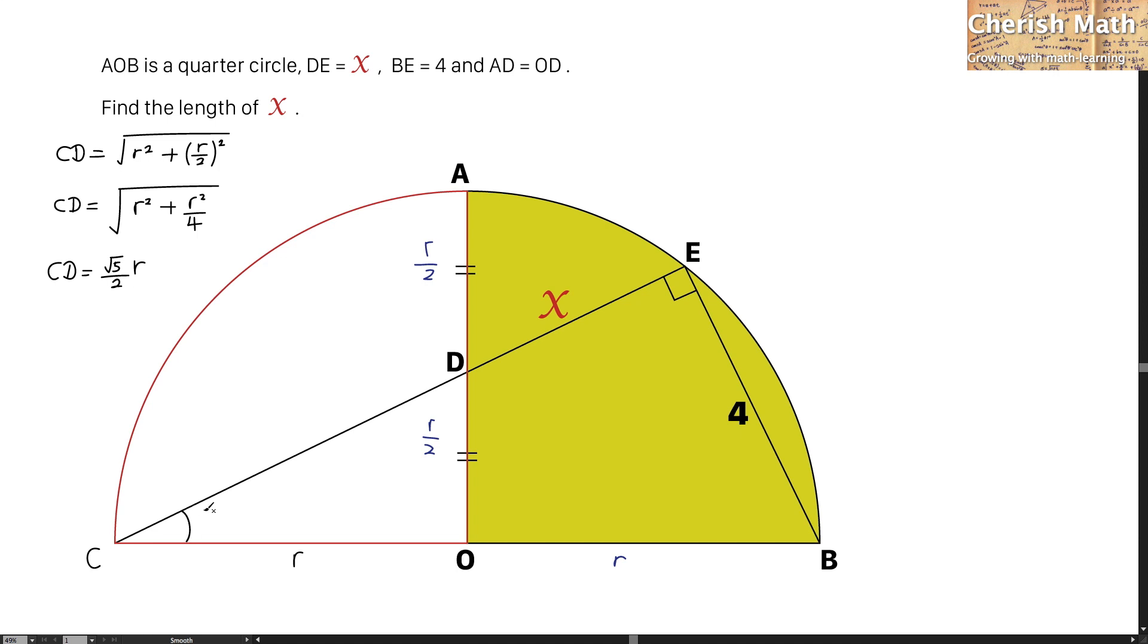I am going to label the angle here to be T, so by referring to the triangle BEC, and through supplementary angle, the value for this part is going to be 90 degrees minus T.